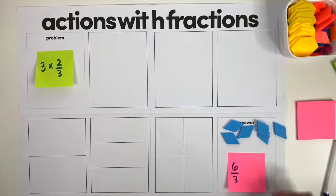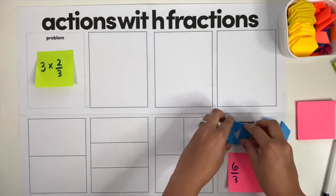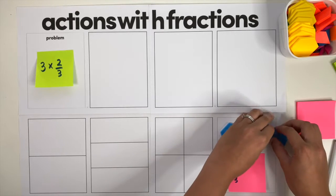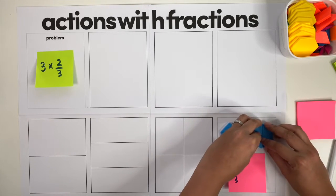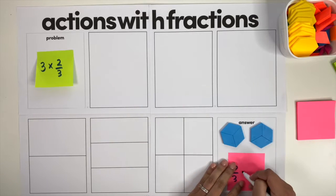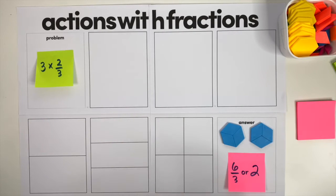Counting them up: one, two, three, four, five, six. If we do some regrouping, we can see that six thirds is also two wholes. So our answer is six thirds, or equivalently, two. Now that students have grasped what it looks like to solve multiplication problems with fractions in a multiple groups situation, that is typically where most fourth grade standards stop.